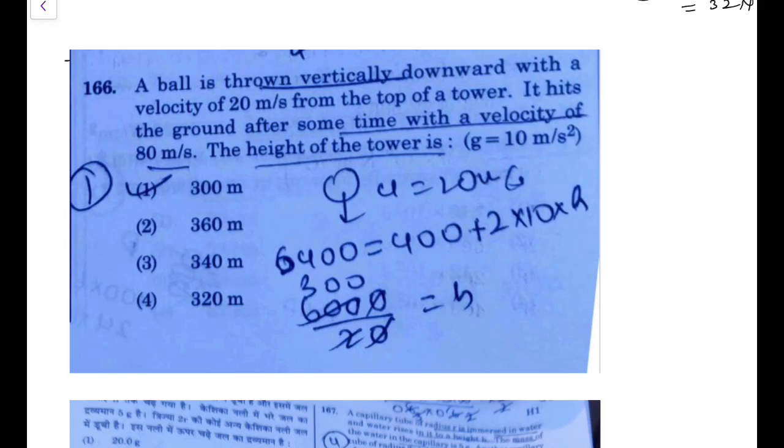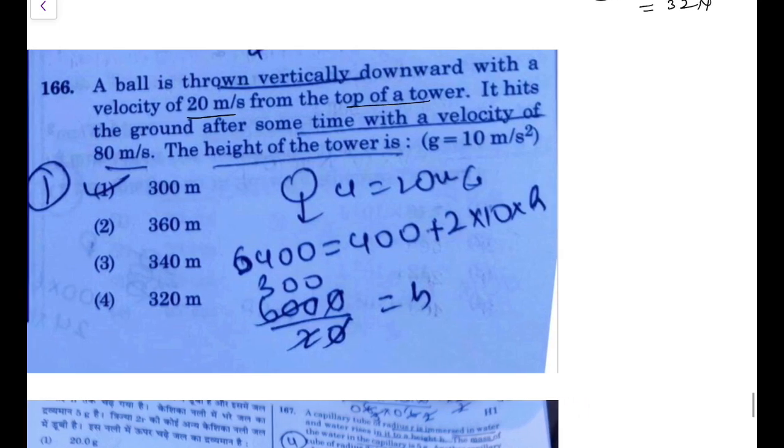Now the next one: a ball is thrown vertically down with a velocity of 20 m/s from the top of a building. It hits the ground after some time with a speed of 80 m/s. The height of the tower is found by applying energy conservation. The loss in potential energy, that is mgh, is equal to the gain in kinetic energy.